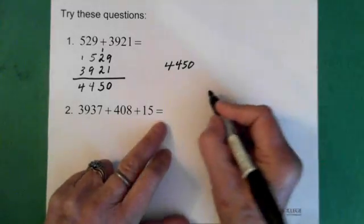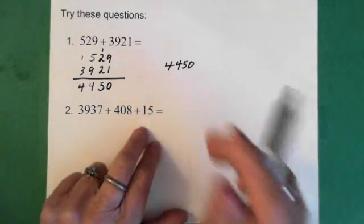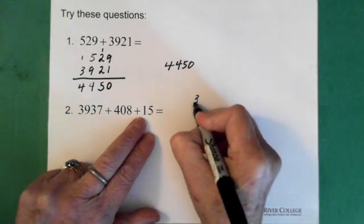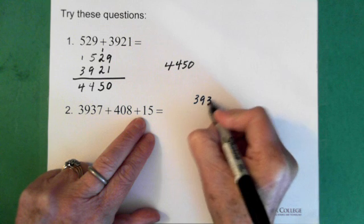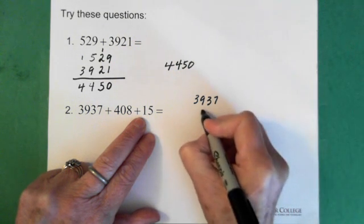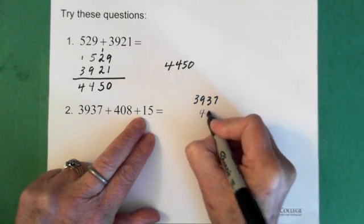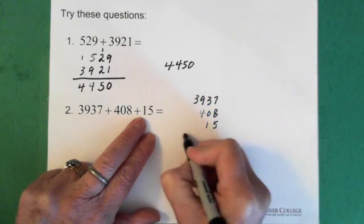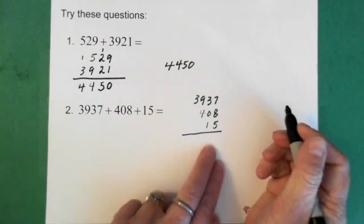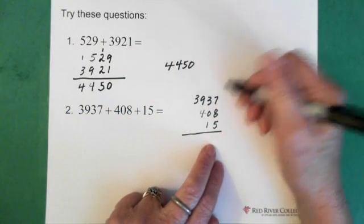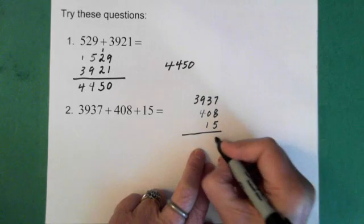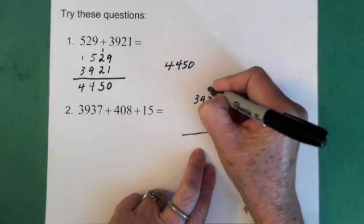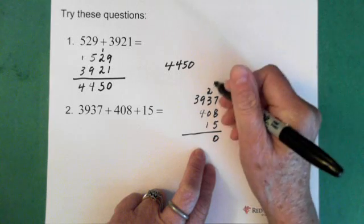Now, next question. 3937 added to 408 plus 15. So 3, 9, 3, 7, 4, 0, 8, and 15. So 7 and 8 is 15. Added to 5 is 20. So the 0 goes here, and the 2 goes above the tens.